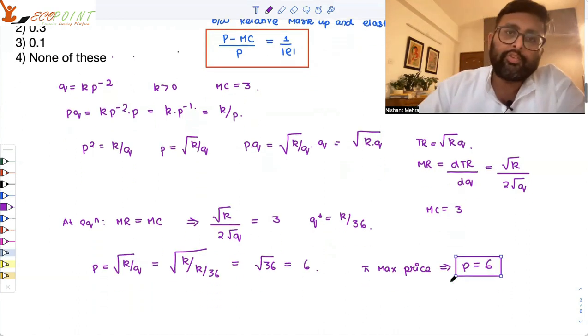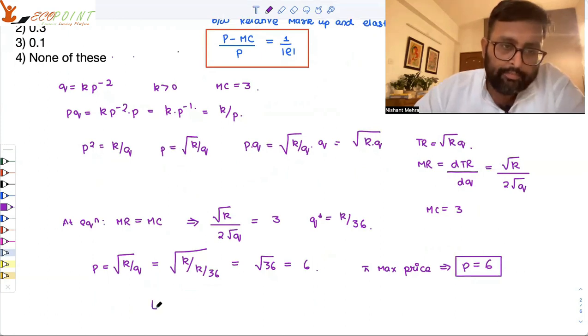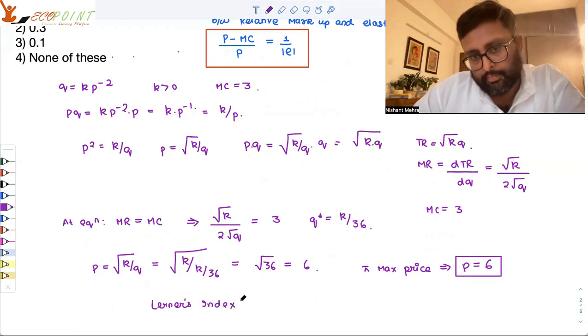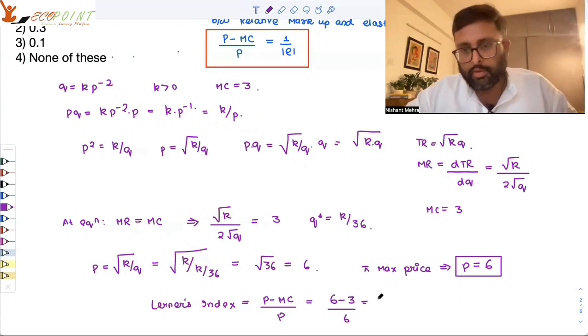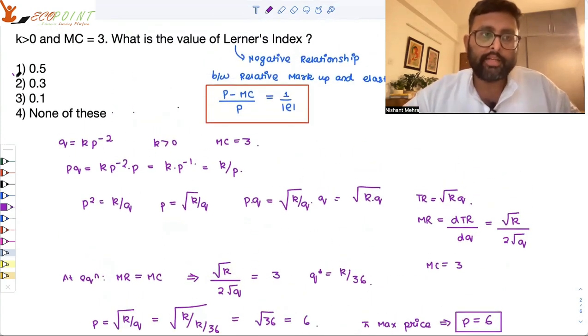Kuch bhi nahi hai. You just have to write this. So what is Lerner's Index given by? p minus MC upon p. p kitna hai? 6. MC kitna tha? 3. Upon 6. That thing will come out to be 3 by 6 which is 1 by 2, 0.5. So what is the value of Lerner's Index?